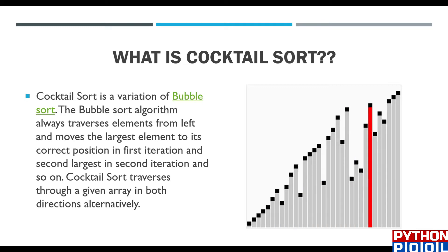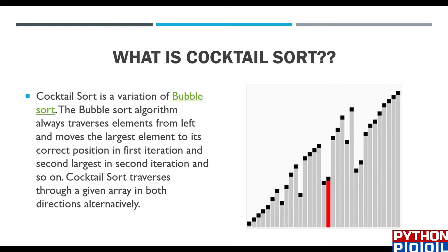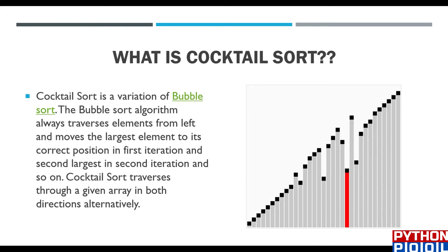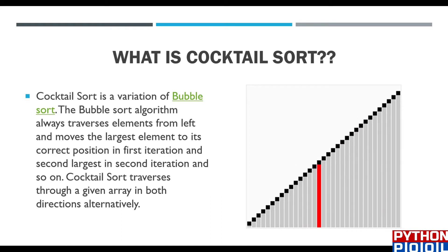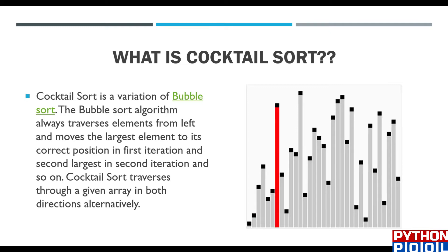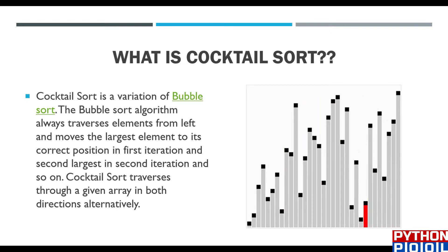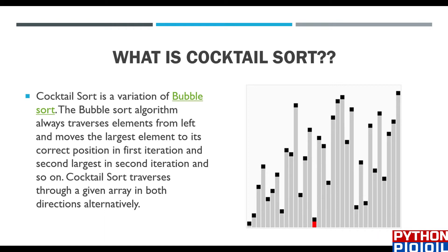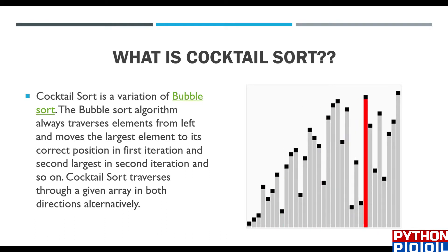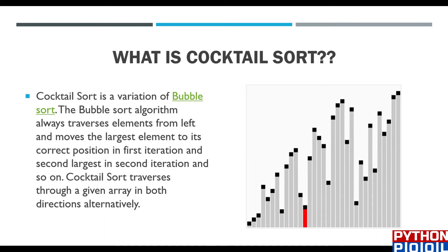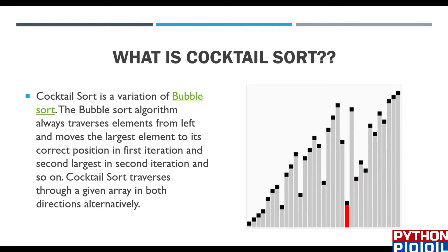In the forward way, we find the maximum element in the given list and put that maximum element to the rightmost part of the list. In the reverse cycle, going towards the back, we find the smallest element and put it to the leftmost part of the given list.